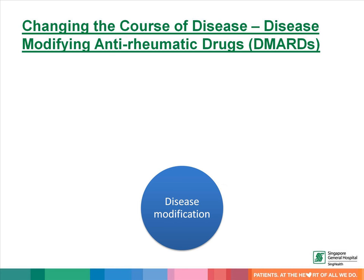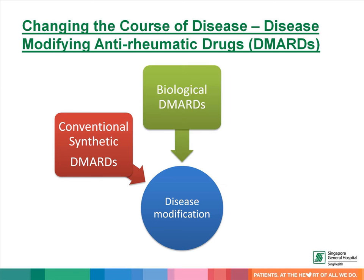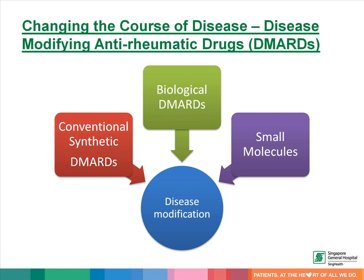The key drugs for rheumatoid arthritis are the conventional synthetic disease-modifying anti-rheumatic drugs, biologics, and the most recent addition, small molecules. By using these medications, we aim to help our patients reach clinical remission or low disease activity. Drug therapy should be adjusted at least every three months in order to reach targeted clinical outcomes.